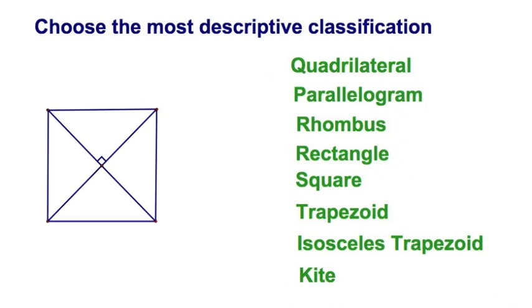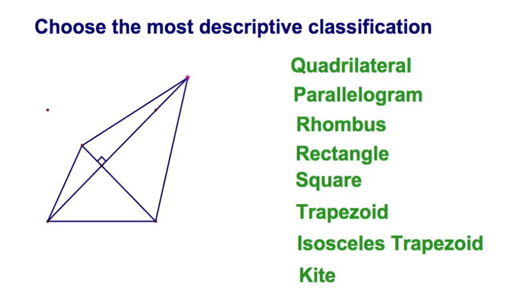Another pair of perpendicular diagonals. No tick marks. You know what that means? Absolutely nothing. It was a four-sided polygon. All I've got is a quadrilateral. Nothing else.